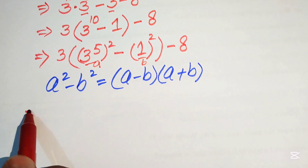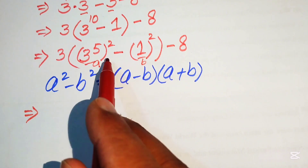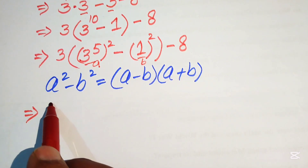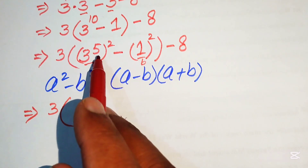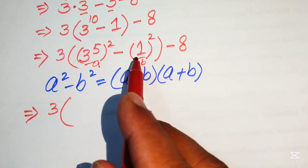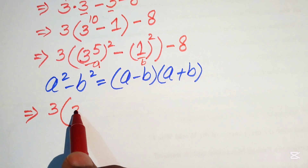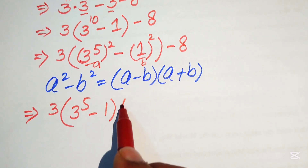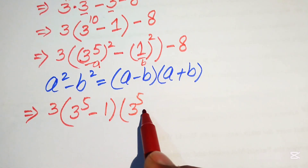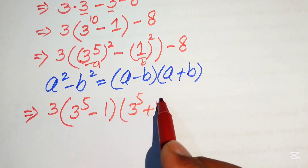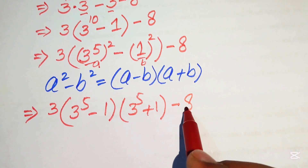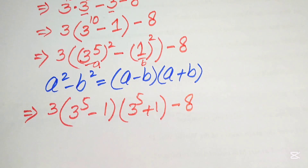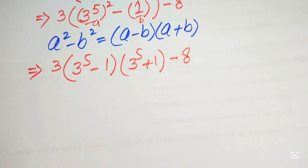Applying the difference of squares formula, 3 to the power of 5 squared minus 1 squared becomes 3 to the power of 5 minus 1, times 3 to the power of 5 plus 1, and then minus 8.